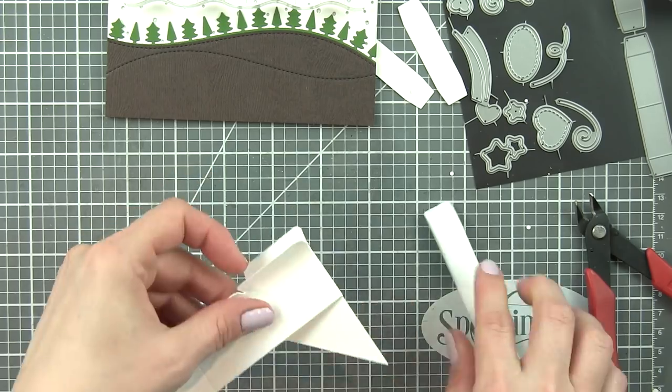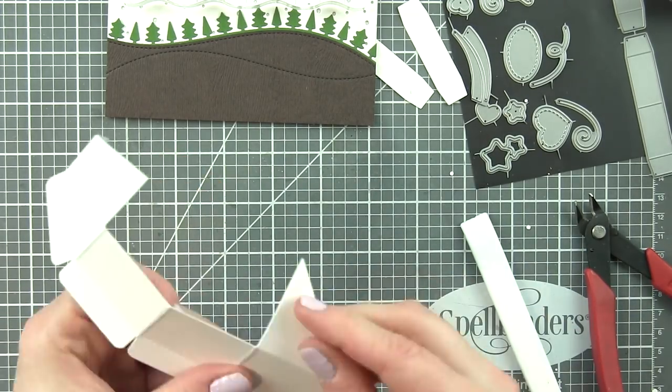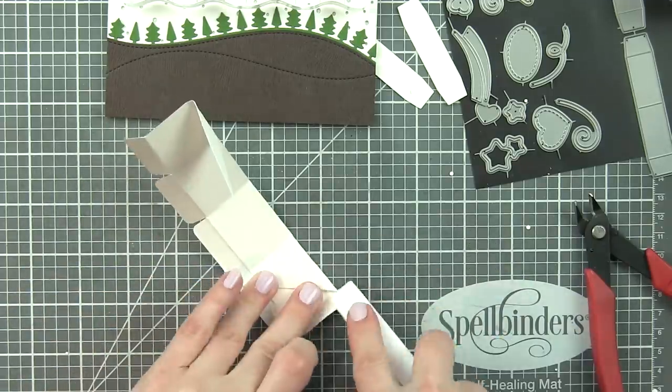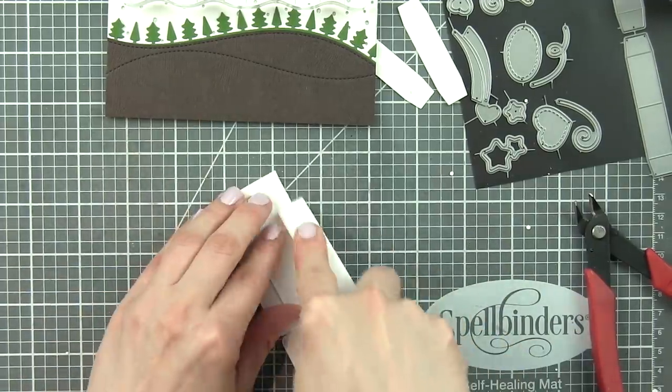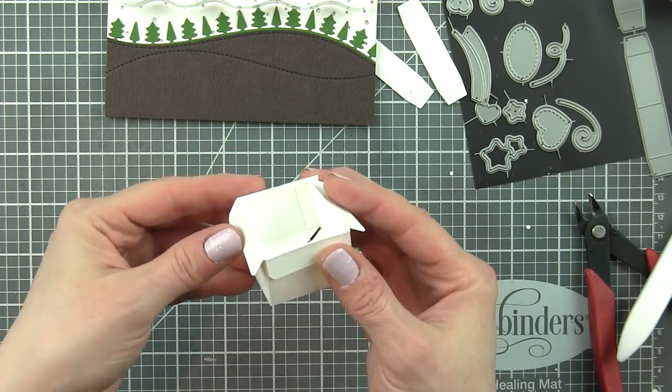So all of those flaps on the front are going to be folded over so that the box kind of folds up and out. Then those triangle pieces are what's going to actually attach this to your card. And then that little tab secures the box together.